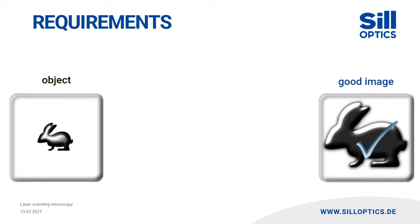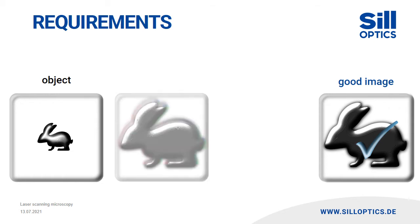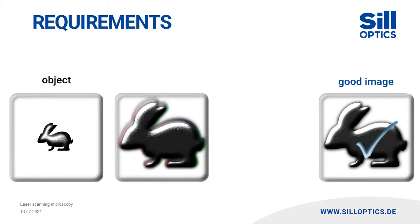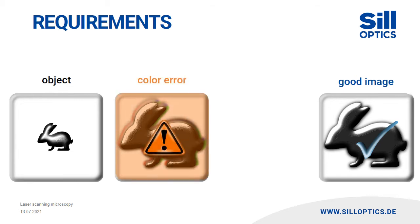In order to ensure that the excitation and fluorescent wavelength behave in the same way, scan lenses have to be color corrected for both of them. Color errors between the wavelengths result in a reduced imaging quality of the microscope.